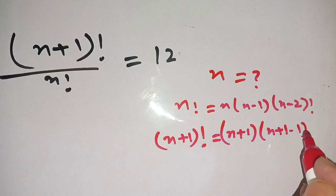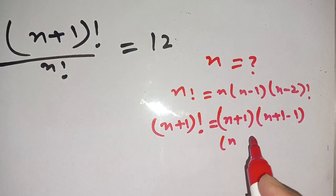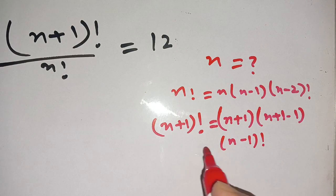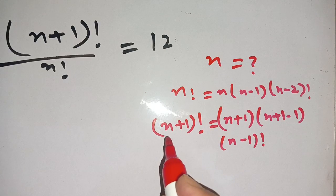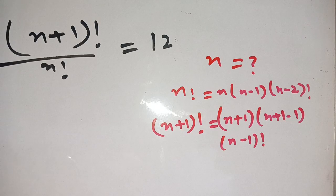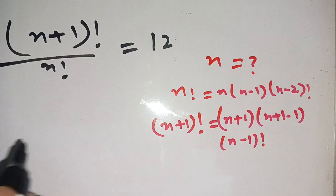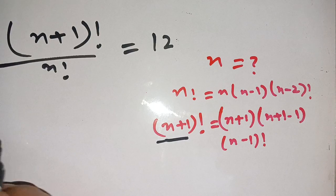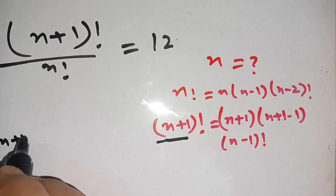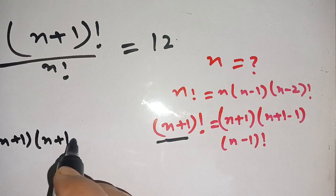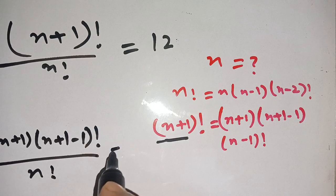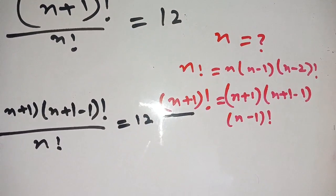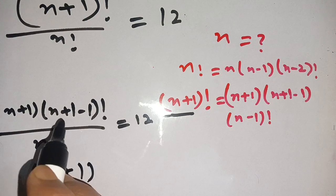...and we also extend it to our required terms. Now applying both formulas on the left-hand side: in place of (n+1)! we substitute the formula and get (n+1) times (n+1−1)! — we stop here — divided by n! is equal to 12.